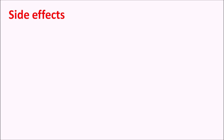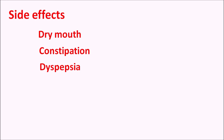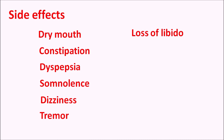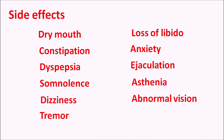The important side effects include dry mouth, constipation, and dyspepsia — mainly due to anticholinergic effects — as well as somnolence (sleepiness), dizziness, and tremor. It can also produce loss of libido, decreased sexual desire, anxiety, and abnormal ejaculation or impotence. Asthenia (lack of energy), abnormal vision due to pupillary dilation, and skin rashes can also be observed with paroxetine.